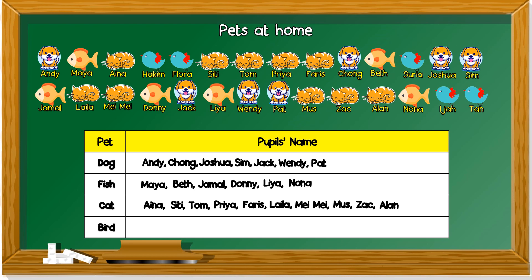Last one, bird. First bird, Hakim. Then we have Flora, Surya, Ija, and last one, Tan. That's how you fill the pet and the pupils name.